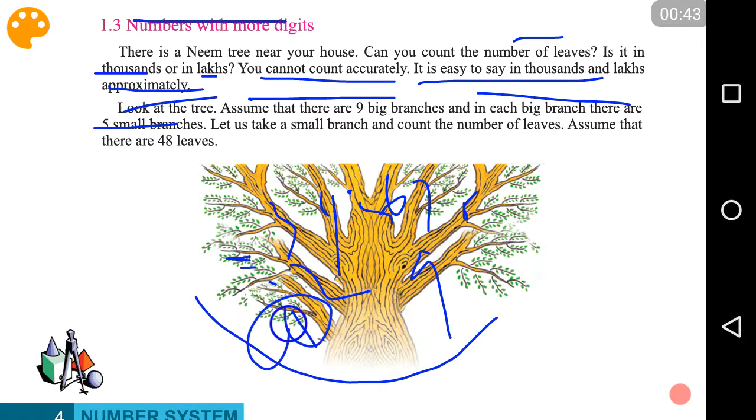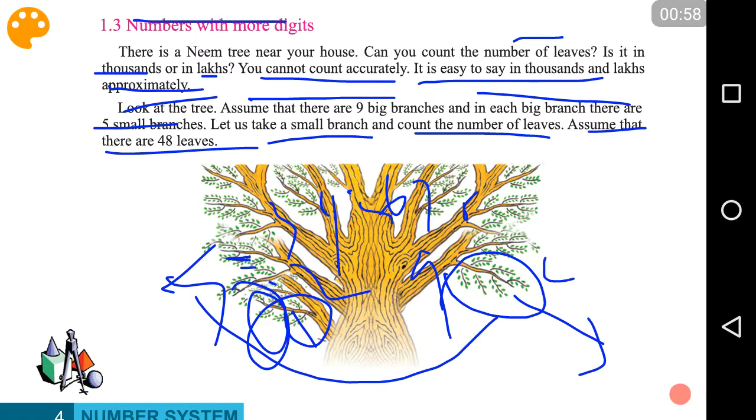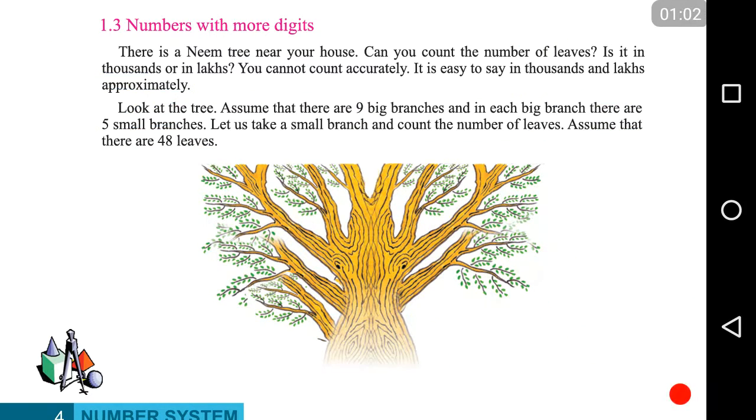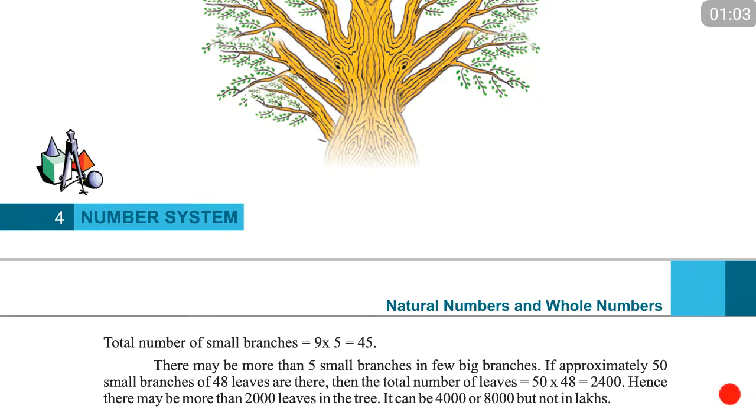Let us take a small branch and count the number of leaves. It is easy to count the number of leaves, right? Assume that there are 48 leaves. So we know that we have 48 leaves in one of the small branches.